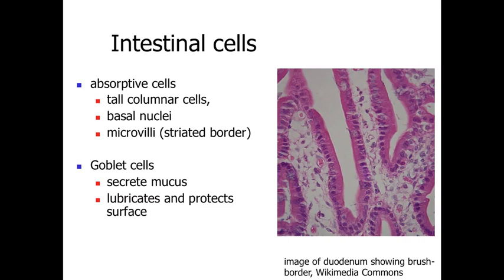Scattered among the absorptive cells are goblet cells, similar to goblet cells seen in other regions of the body, involved with secreting mucus that lubricates and protects the surface of our epithelium.